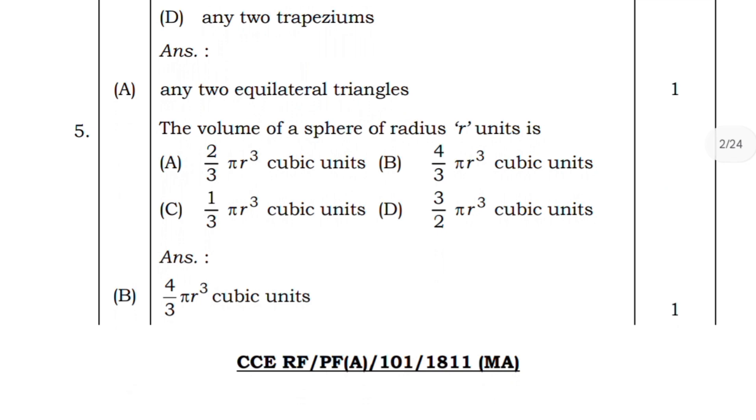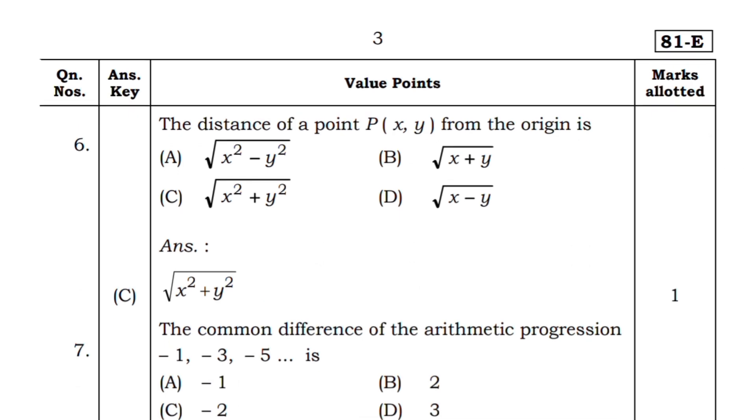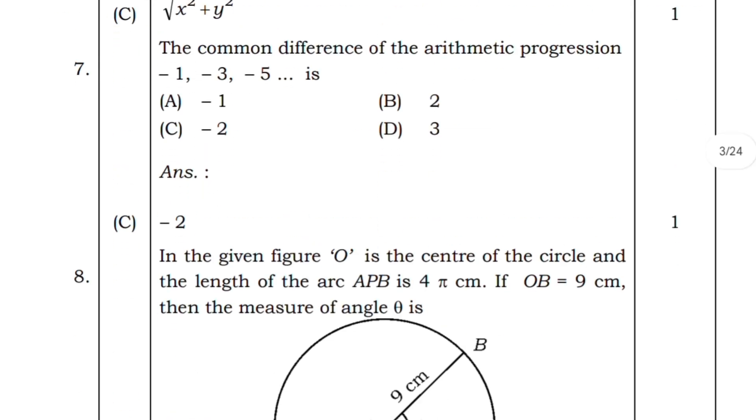The volume of sphere with radius r is 4 by 3 pi r cubed cubic units. Coming to the next question on distance formula - you need to read all the formulas which are very important for scoring MCQs, especially from arithmetic progression and many other chapters. The common difference of the arithmetic progression is minus 2.